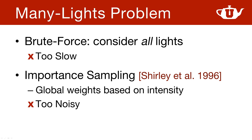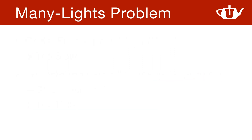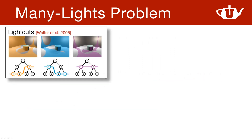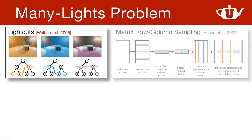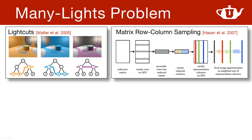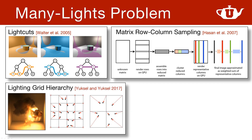I consider this approach as the baseline, and whatever clever thing we do on top of this, we should never get results that are worse than traditional importance sampling, because this is the simplest thing we can do. For achieving a more efficient localized solution, the first method that was introduced was light grids, followed by matrix-row-column sampling. Both of these methods suffer from sampling correlation, because they keep picking the same light samples. As a result, the solutions are temporally unstable and they incur a substantial amount of flickering.